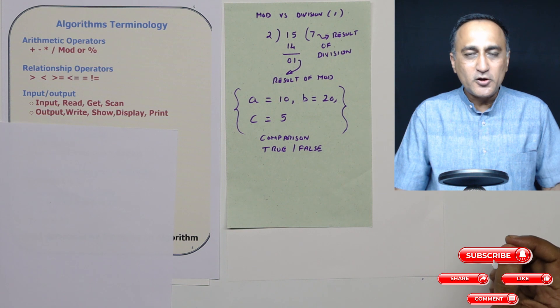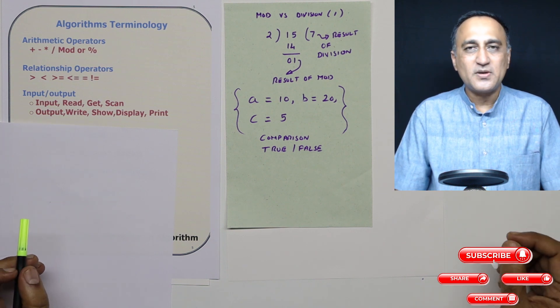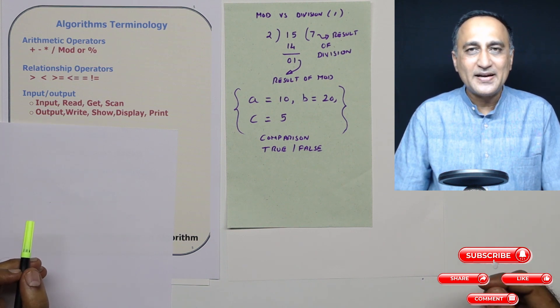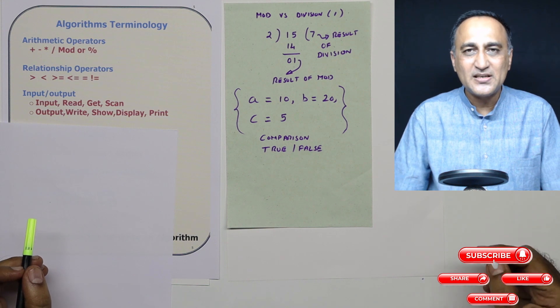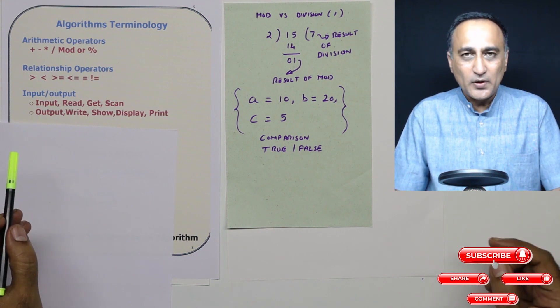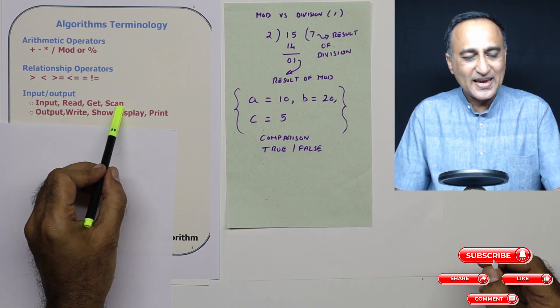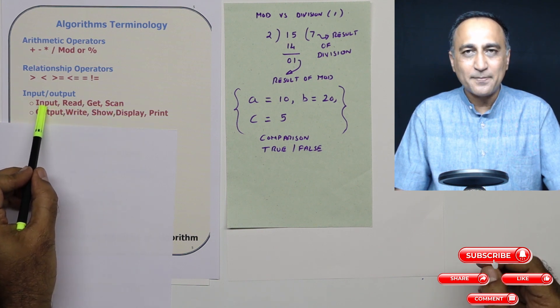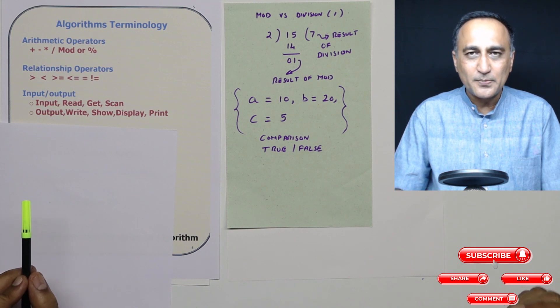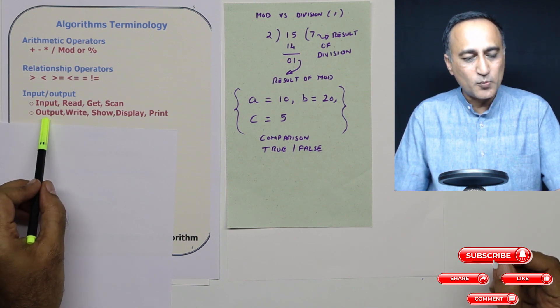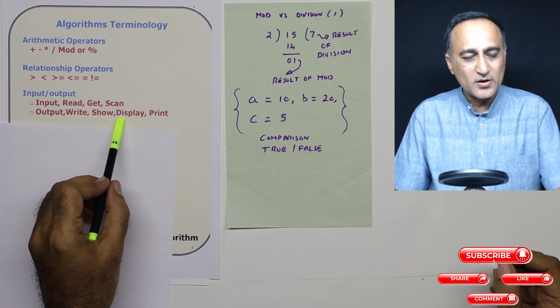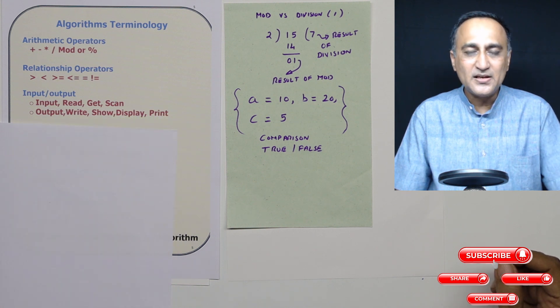In order to use the algorithmic approach, I will be required to read in data as well as display something on the screen. So for trying to read an input, I'll use the words input, read, get, scan - these all mean the same. If I have to show something on the printer or monitor, I'll use the words output, write, show, display, or print - these all mean the same.